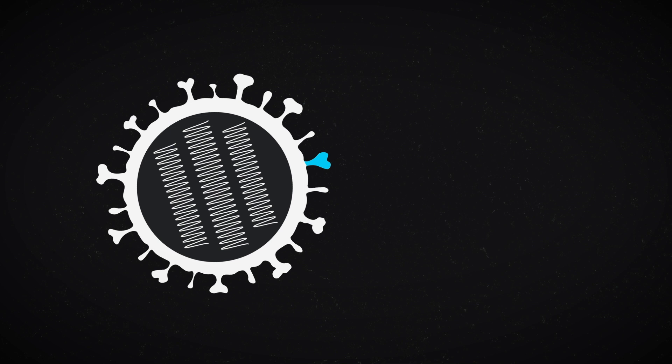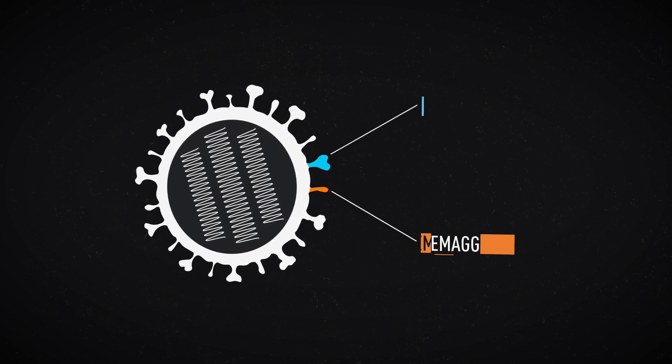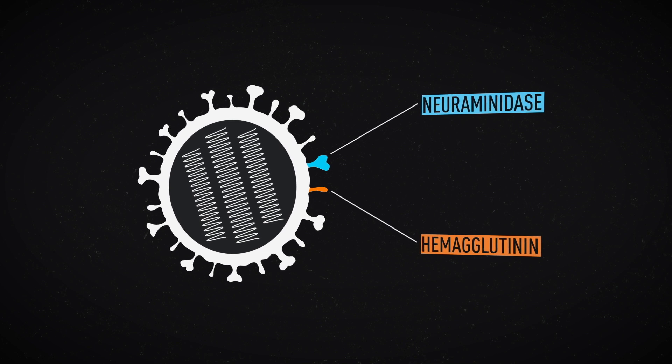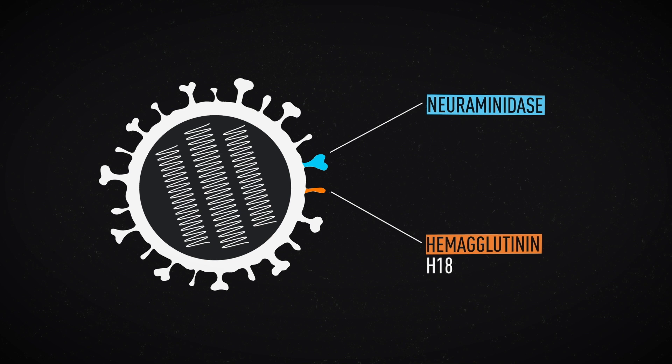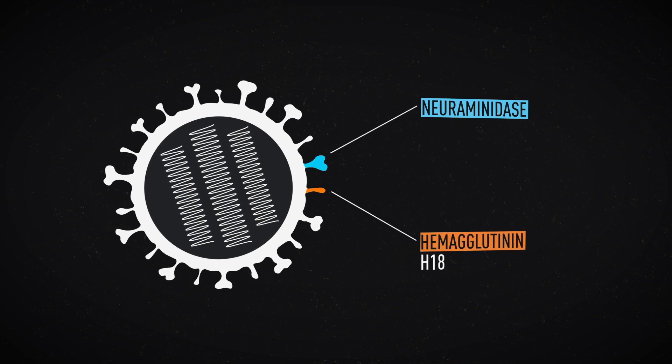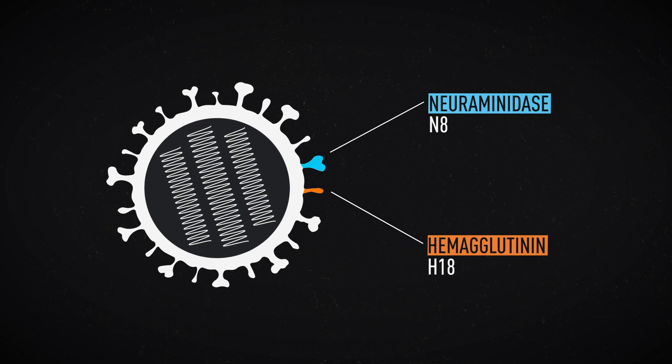Its structure consists of two surface proteins called antigens: hemagglutinin and neuraminidase. Both have multiple variants, 18 in the case of hemagglutinin, which helps the virus to attach to cells, and eight of neuraminidase, which helps the virus to penetrate human cells.